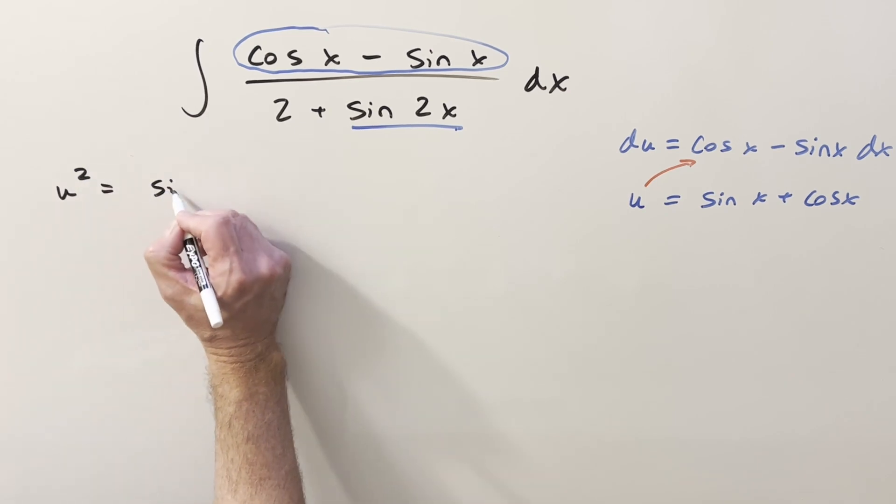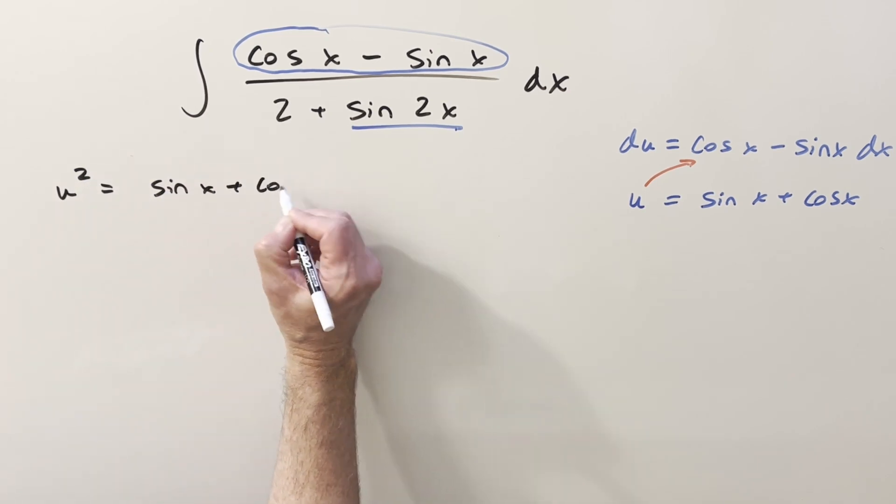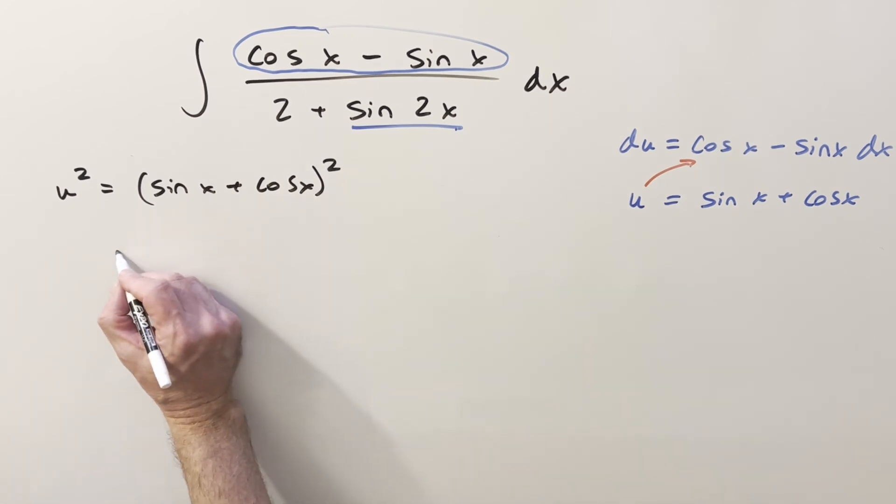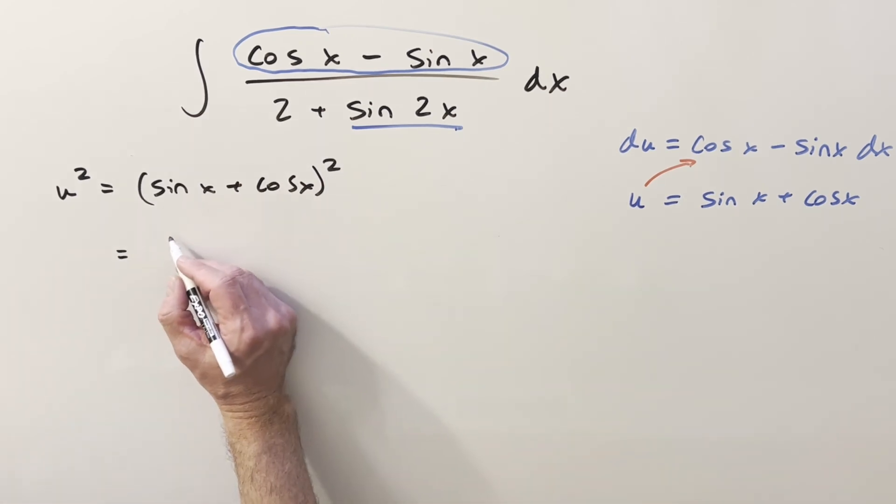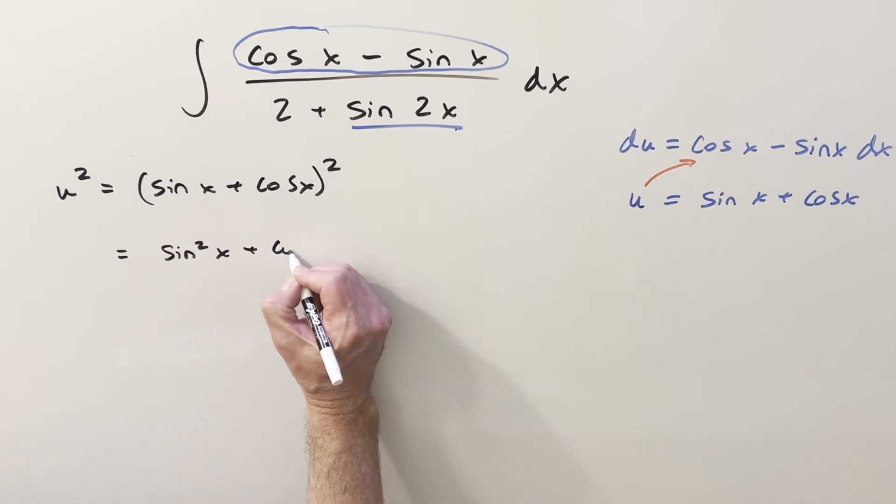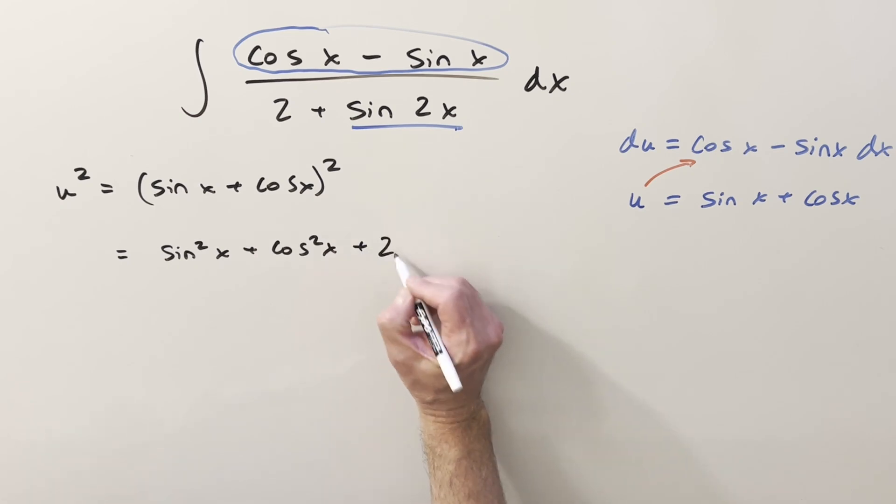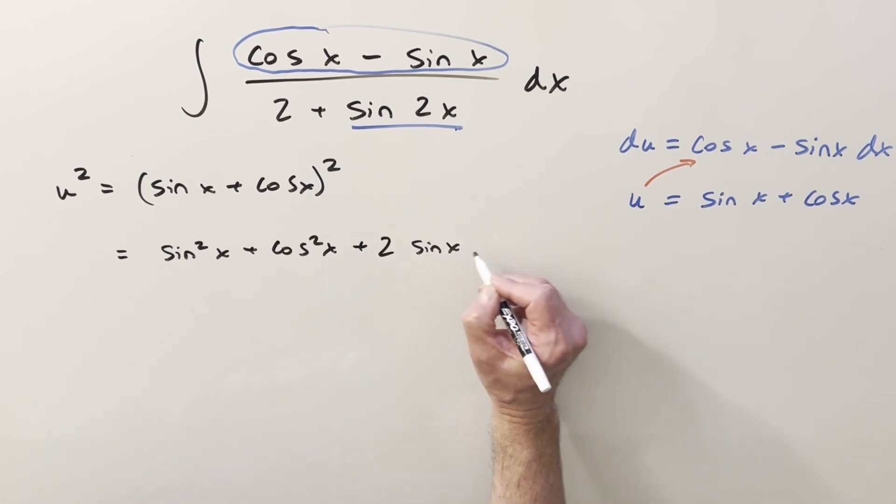That's going to be sine x plus cosine x all squared. You wouldn't necessarily think to do this if you hadn't seen this before. And then let's just, we'll square everything out. What's going to happen, you get sine squared x plus cosine squared x. And then for the middle terms, you're going to have 2 sine x cosine x.